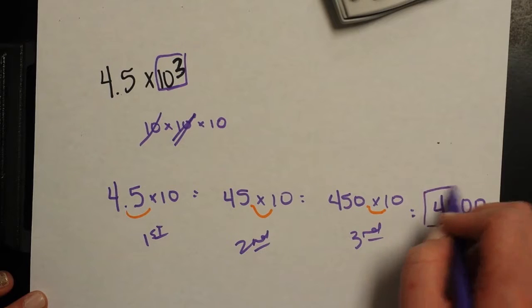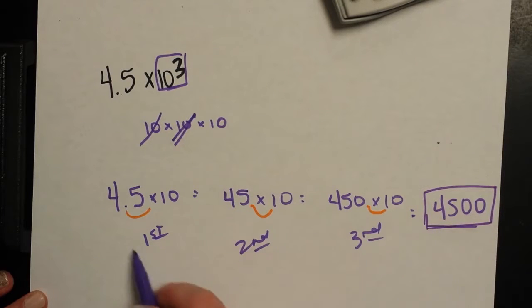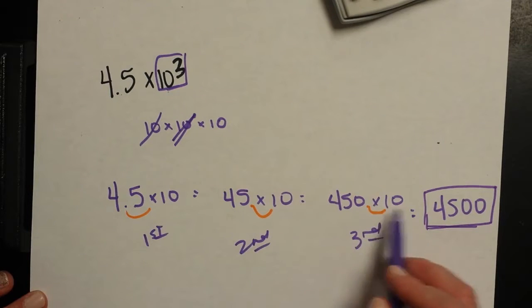And then this here is my number. That's what I get when I multiply 4.5 times 10 three times. So this times 10 one time, two times, three times gives me this.